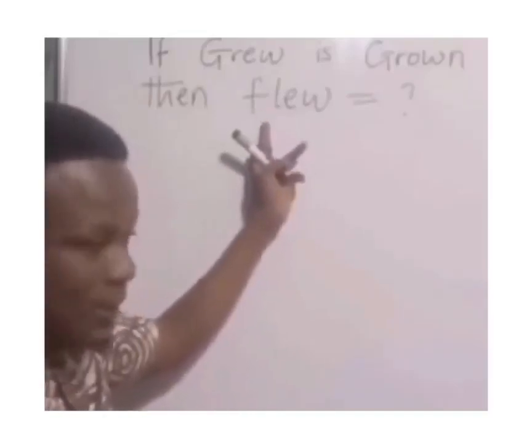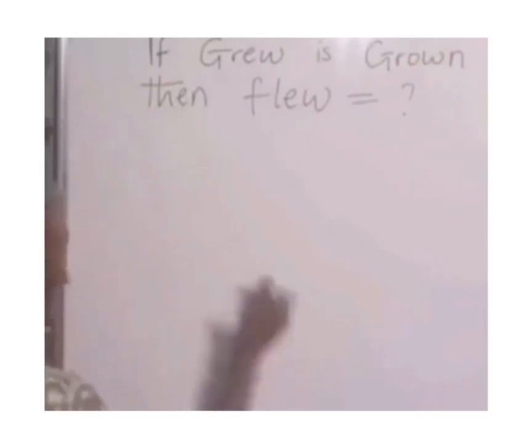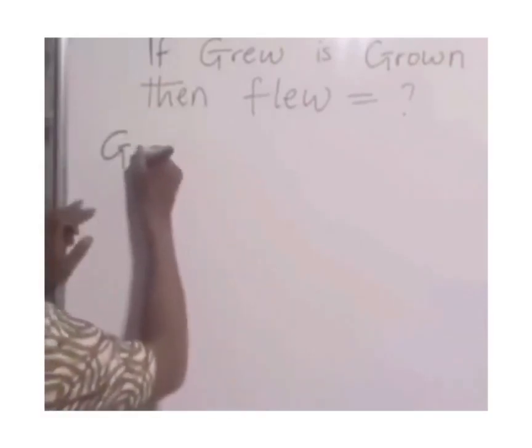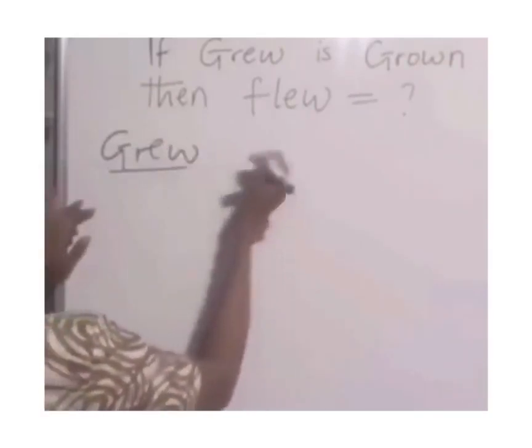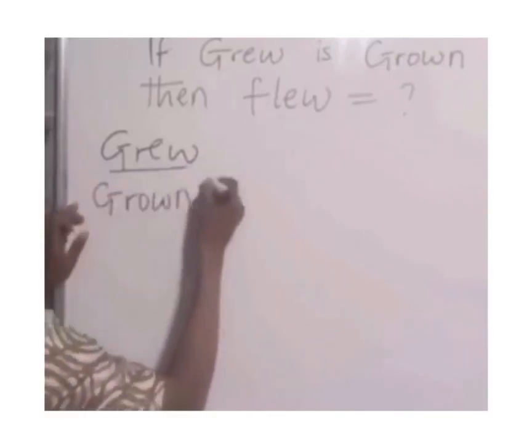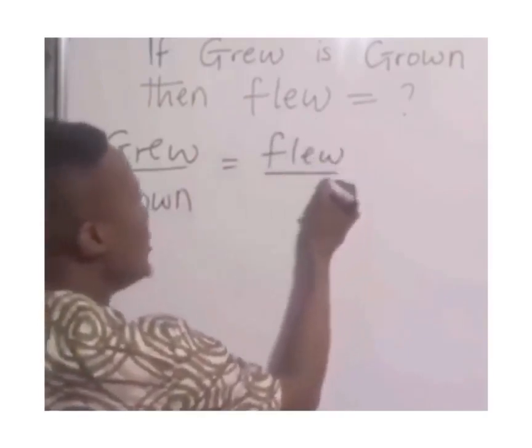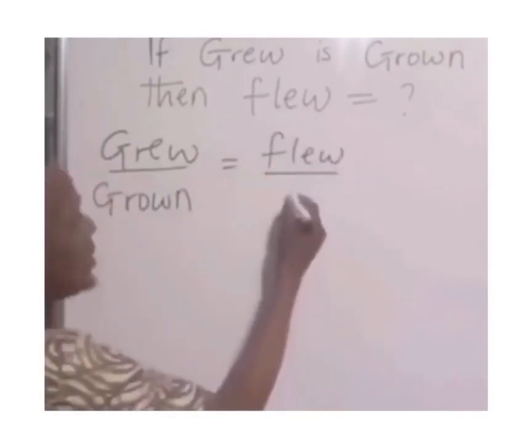Then flew, which is a past tense, we want to get the past participle. Look at what the mathematician will do: grew over grown is equal to flew over the past participle we don't know, so we can represent it with y.